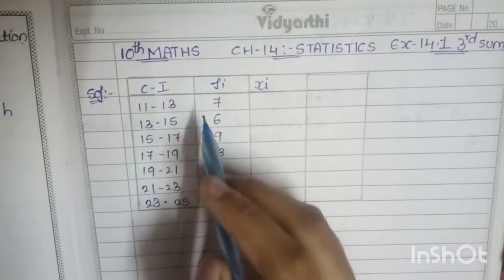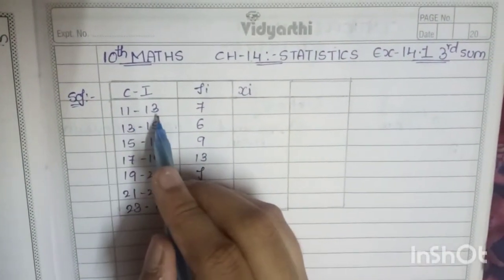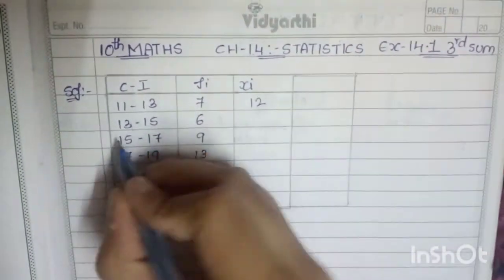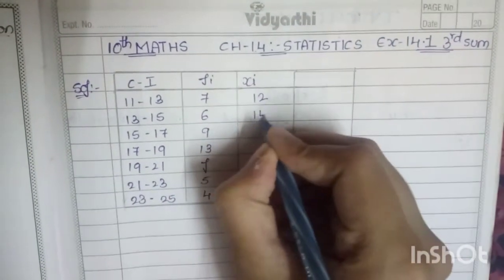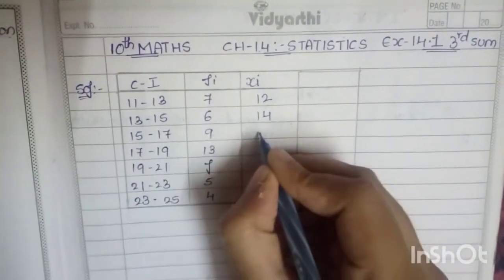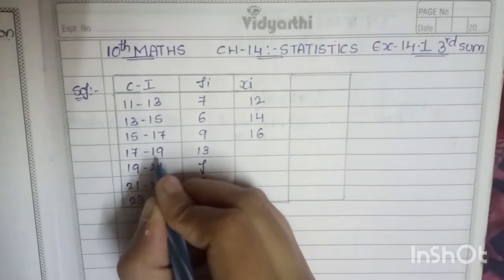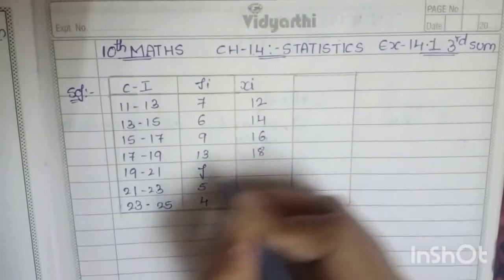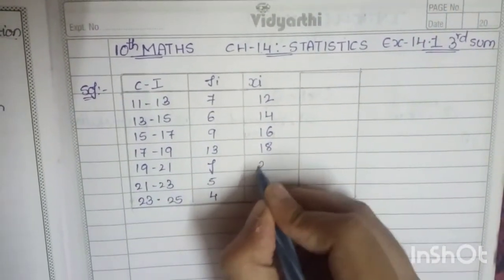So 11 plus 13 by 2 is 12, 13 plus 15 by 2 is 14, 15 plus 17 by 2 is 16, 17 plus 19 by 2 is 18, 19 plus 21 by 2 is 20, 21 plus 23 by 2 is 22, 23 plus 25 by 2 is 24.